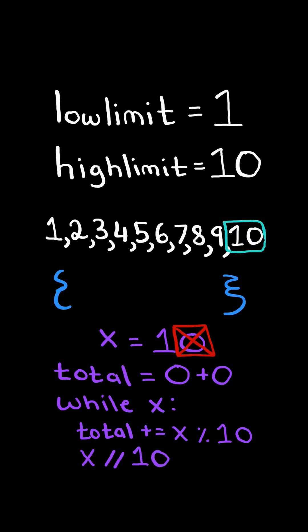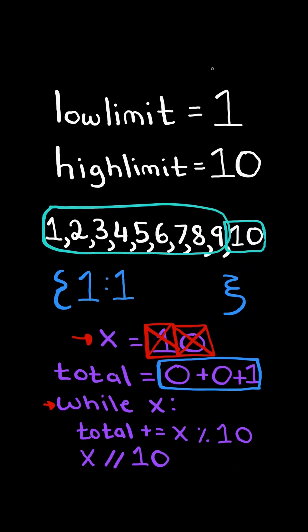This removes the last digit, and we continue the process. When x reaches 0, we stop. We then input the key as the total and increment its value by 1, and we perform this algorithm for the rest of the numbers.